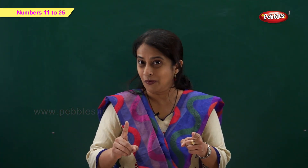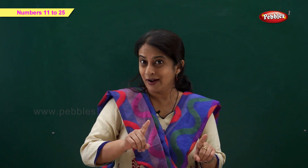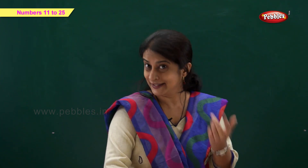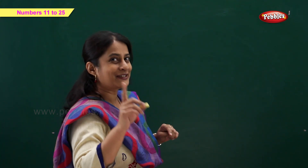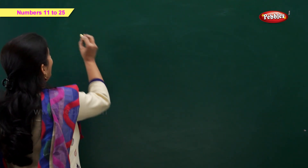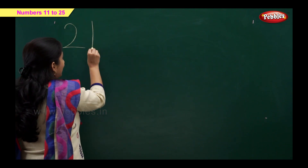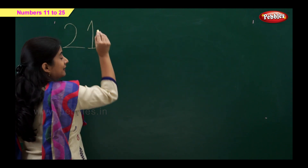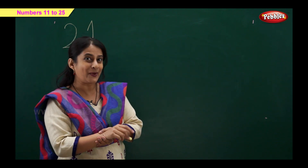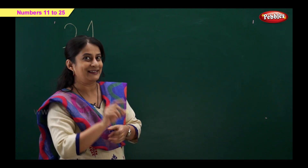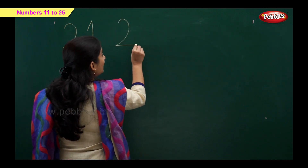Now get set, go! We are going to write numbers 21 to 25. Let's start. Number 21: that's 2 and 1. So 2 and 1 is 21. Now who is going to tell me 22? How to write? Yes — 2 and 2 is 22!